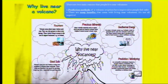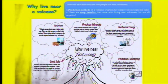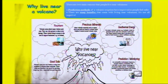People do live near volcanoes even though they're dangerous. One reason is tourism — in an exam answer you should mention specific jobs this brings, such as working in hotels, restaurants, or as tour guides, which gives people an income. There are also precious minerals such as copper, silver and gold that people can mine and sell. Geothermal energy can be produced using the heat of the volcano, reducing energy costs. Fertile volcanic soils enable crop growing, so farming provides a good economic income. Finally, some scientists — seismologists — live near volcanoes so they can predict and monitor them.